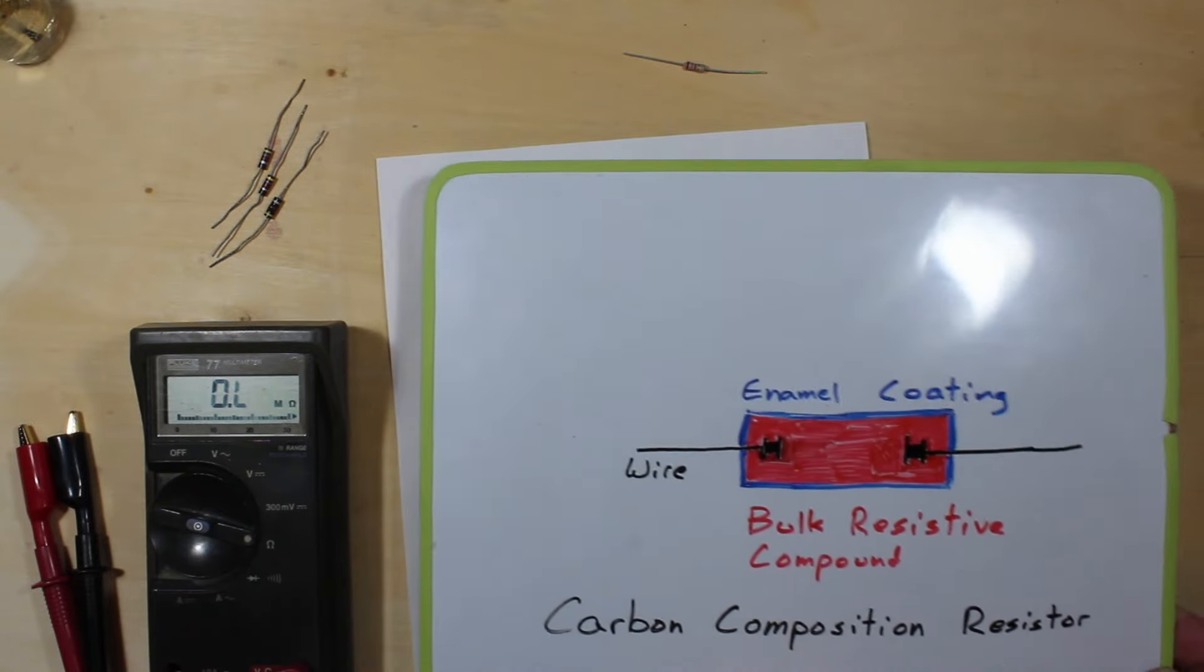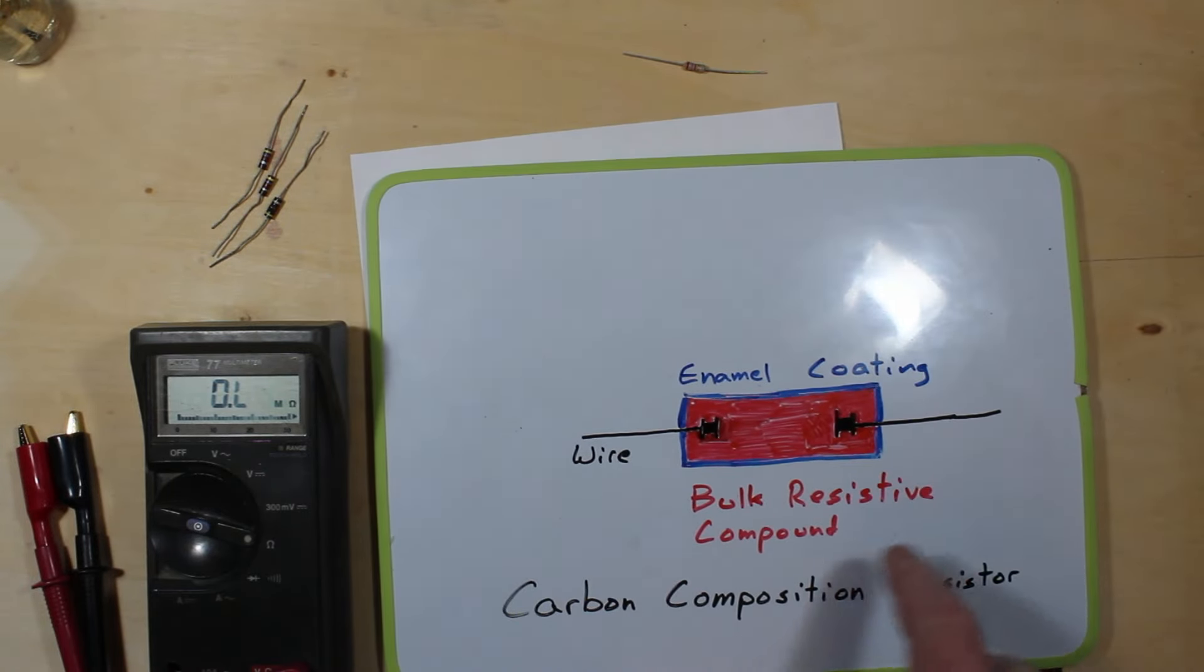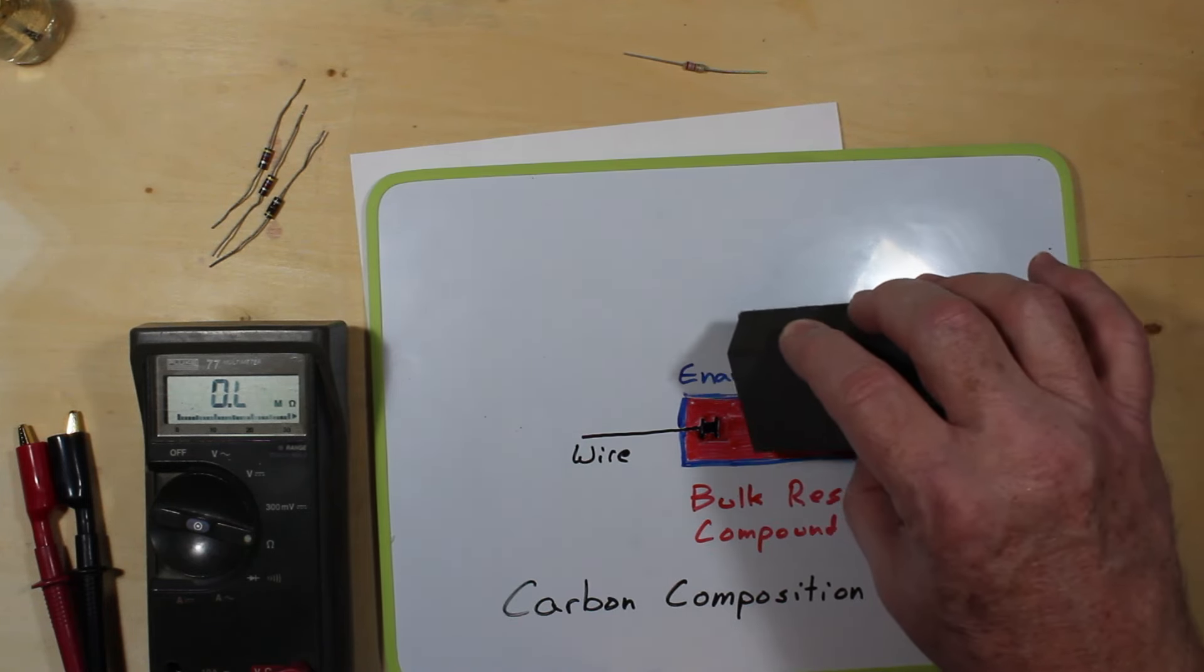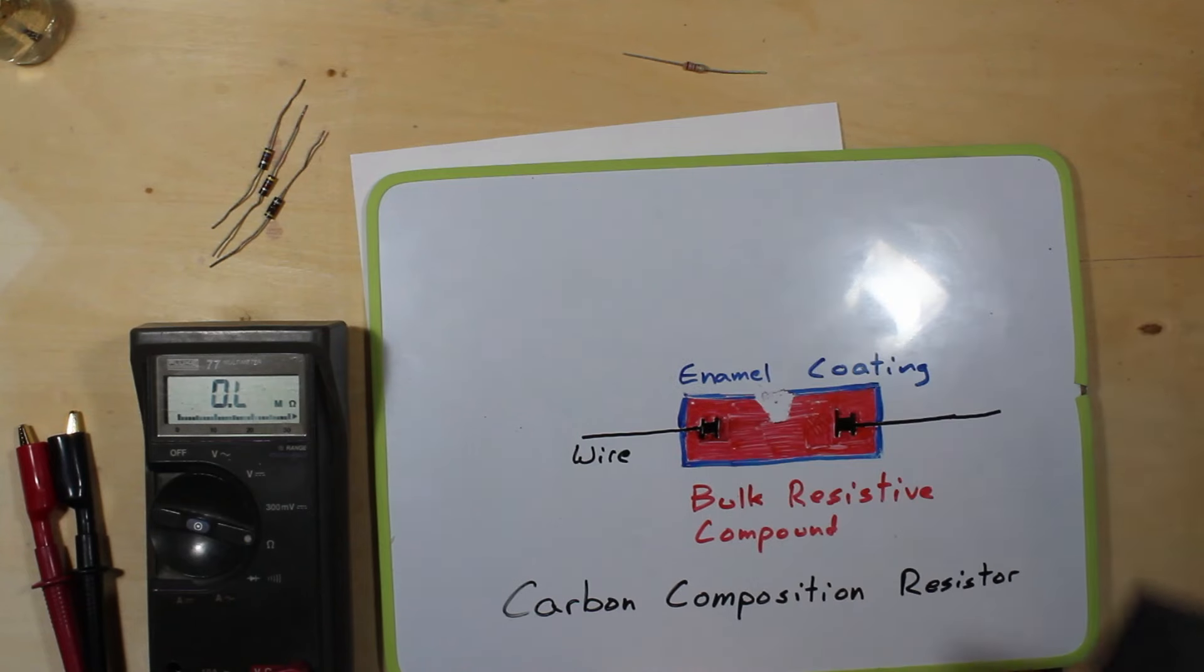And now for one of the carbon composition style, the carbon composition is basically bulk resistance inside of here. So what we're going to do is we are going to go into there with the file and we're going to take and cut a notch out of it like so, basically is what's going to happen.